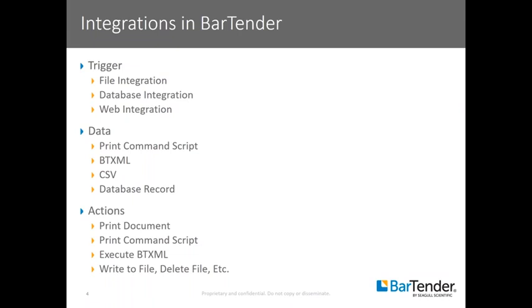Lastly is the action. The action is what you would like or need executed once the trigger has occurred and the data passed. With Bartender, one of those actions almost always ends up being to print a document. Pending the data coming in, you'll want to adjust your actions accordingly. For print command script, we'll want to make sure that we select the action that is expecting print command script.